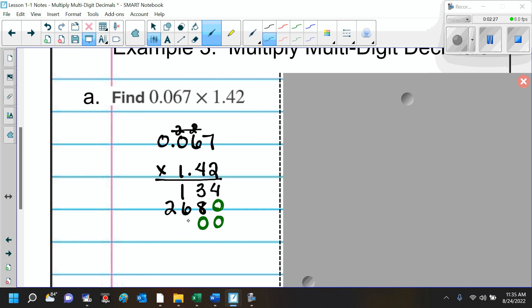And now, we multiply 1 times all of those. So, we have 1 times 7, 7. And then, 1 times 6, 6. And, of course, you don't have to multiply that first 0. So, here, we're going to add.